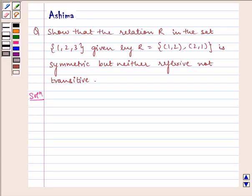Hello and welcome to the session. Let us discuss the following problem today. Show that the relation R in the set {1,2,3} given by R = {(1,2), (2,1)} is symmetric but neither reflexive nor transitive.